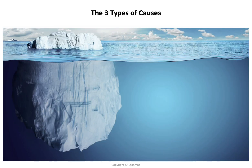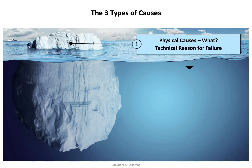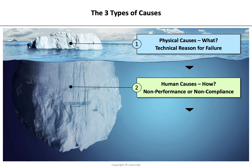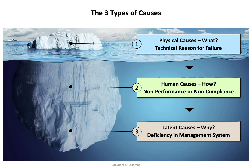There are three types of causes we need to understand. The tip of the iceberg is the physical cause — so what happened? The technical reason for failure. Just below the surface there are the human causes — how did that happen? Non-performance or non-compliance. And below that, there are the latent causes — why did that happen? The deficiencies in the management system that allowed the problem to continue unchecked.